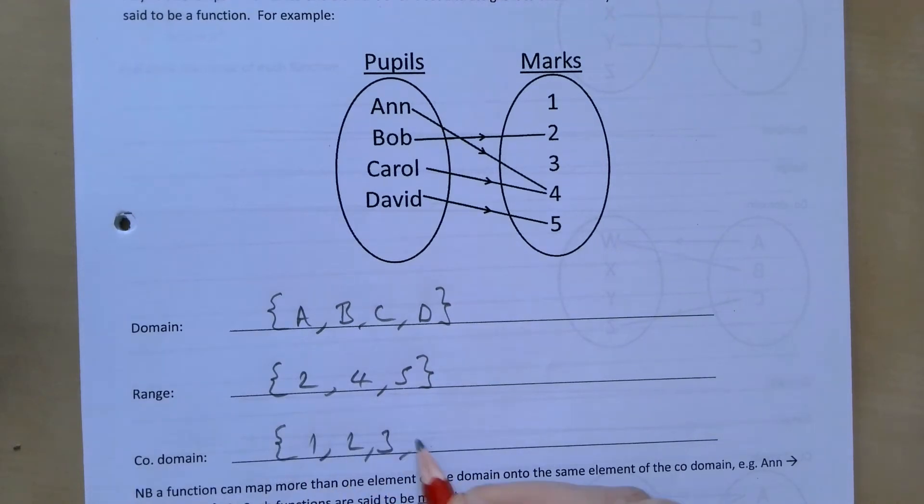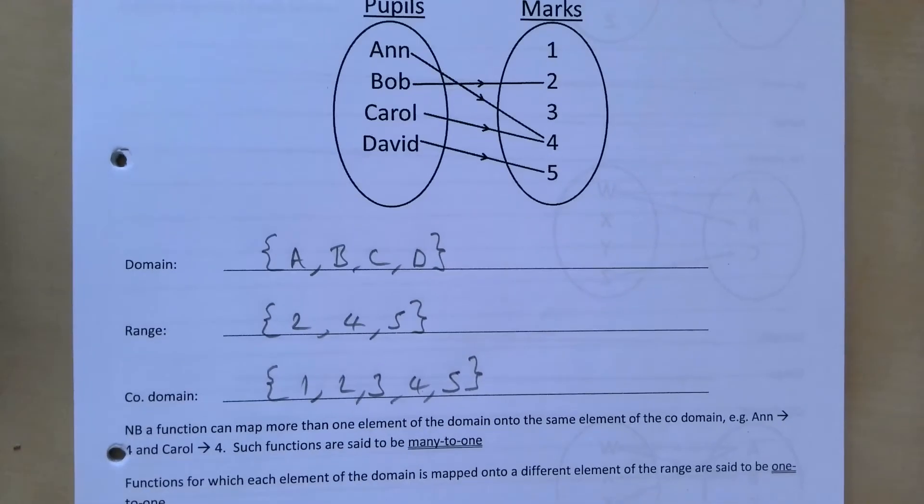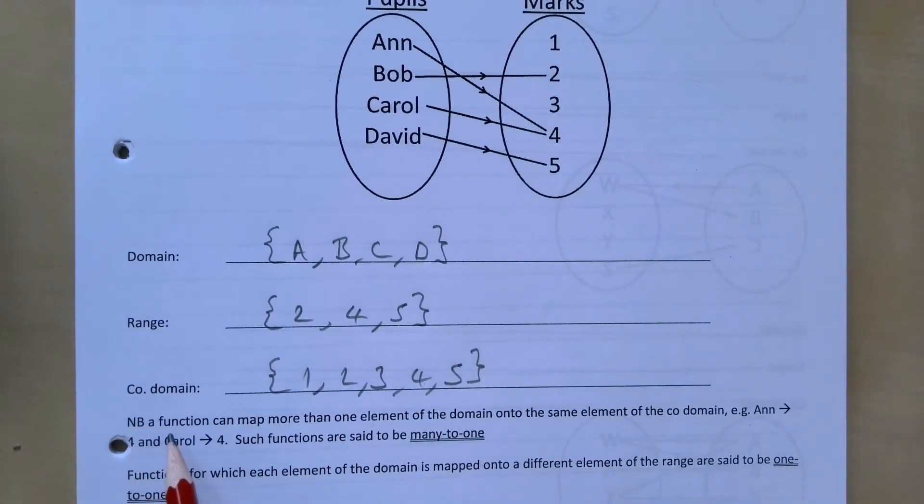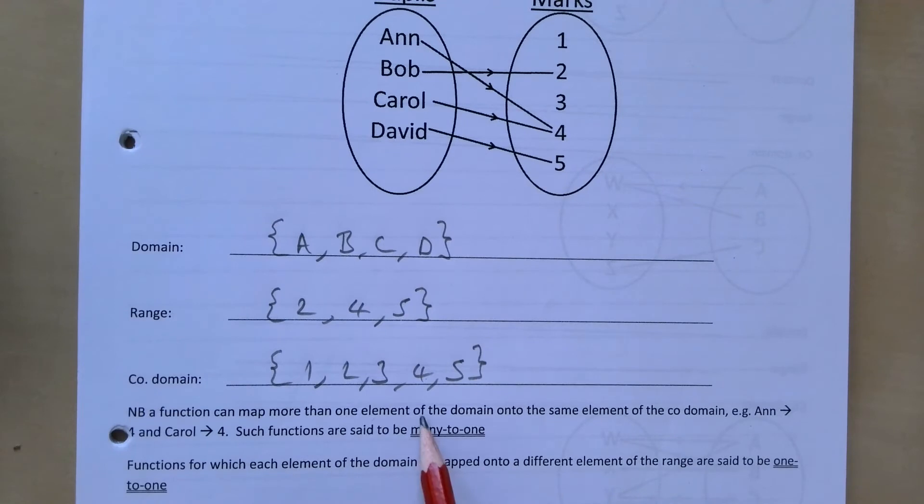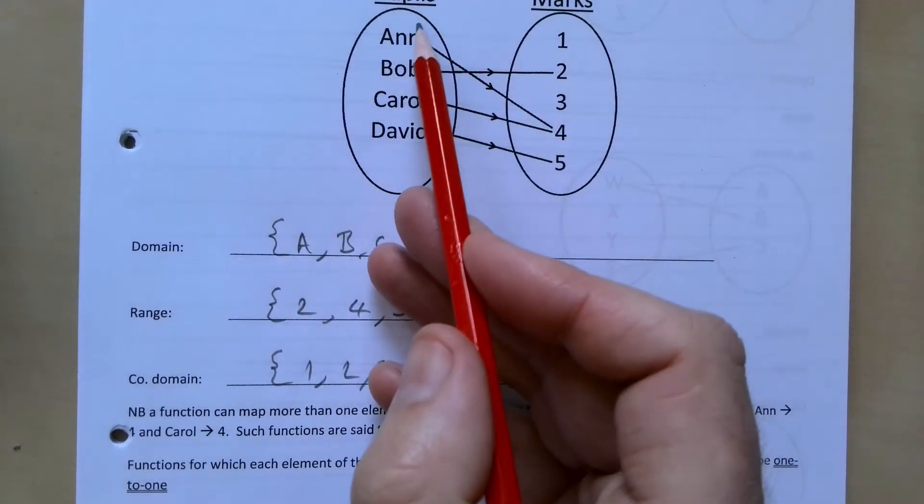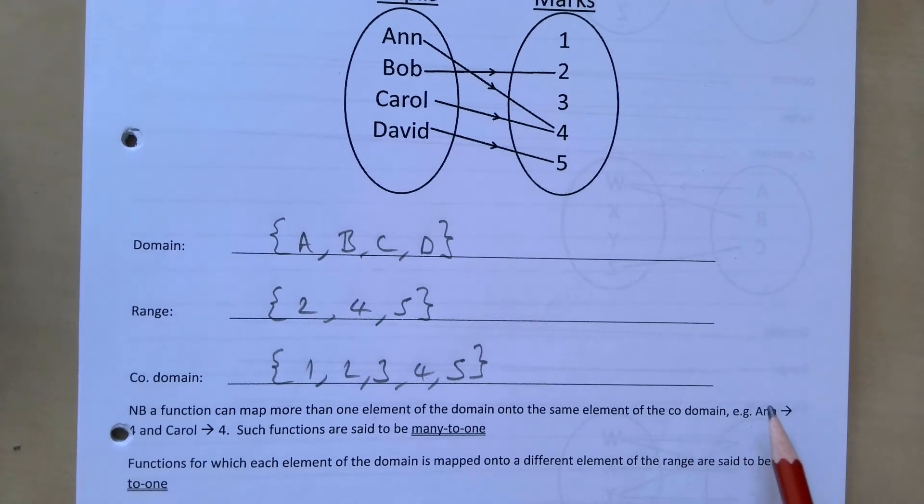So note a function can map more than one element of the domain onto the same element in the co-domain. For example, both Ann and Carol got 4. Such a function is said to be many-to-one.